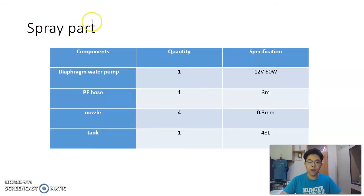For the spray part, we have one diaphragm water pump, one PE hose, four nozzles, one tank. And the diaphragm water pump is 12V and 60W. The PE hose is 3m, the nozzle is 0.3mm, and the tank is 48L.